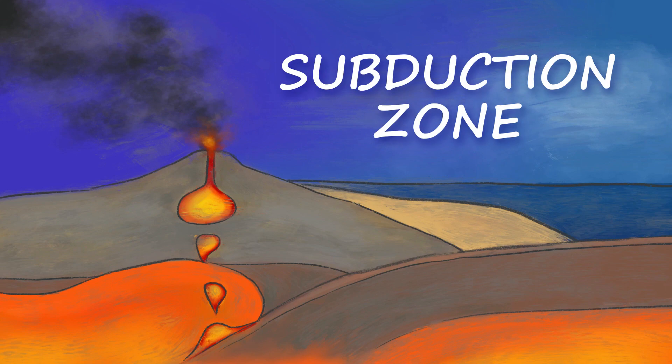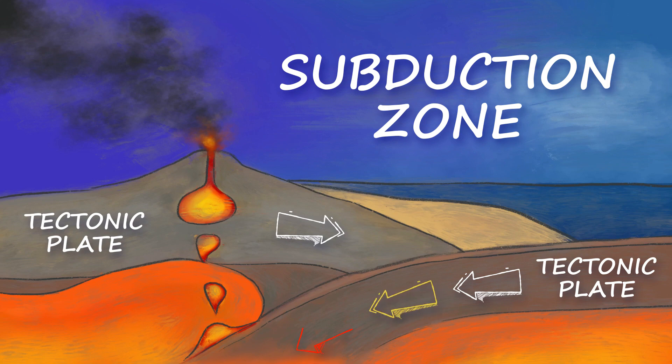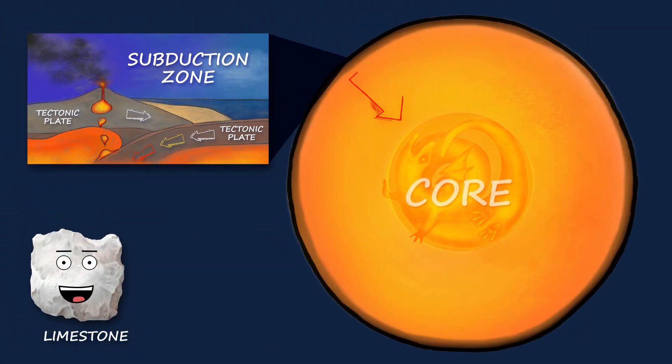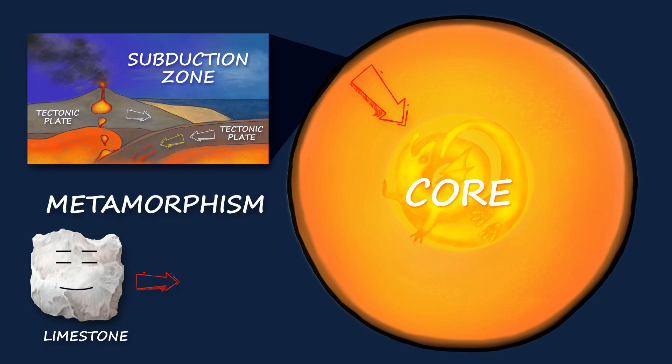I live near a subduction zone, a region where pieces of the Earth's crust called tectonic plates collide and one goes under the other. As I get closer to the hot core at the center of the planet, I undergo metamorphism and recrystallize to form marble, which is a type of metamorphic rock.